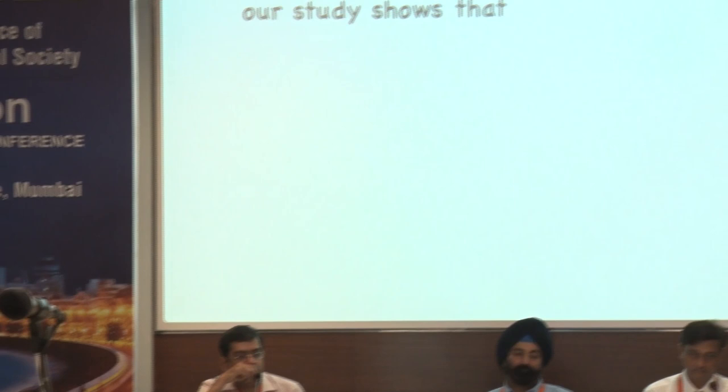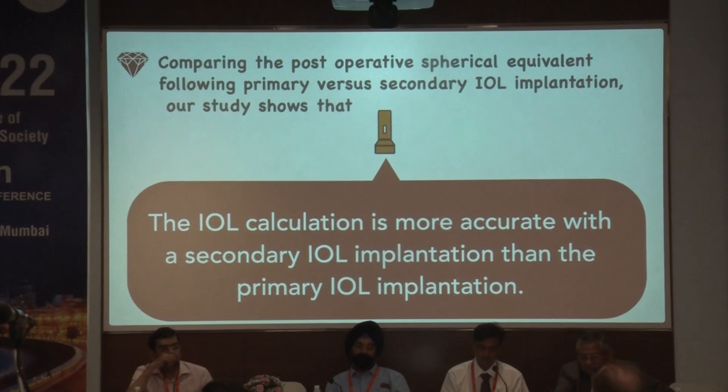In our study, age ranged from 1 to 72 years with a mean age of 29.59 years. Males were more commonly affected, and the right eye was more affected at 55.7%. Comparing post-operative spherical equivalent following primary versus secondary IOL implantation, our study shows that IOL calculation is more accurate with secondary IOL implantation than primary IOL implantation.